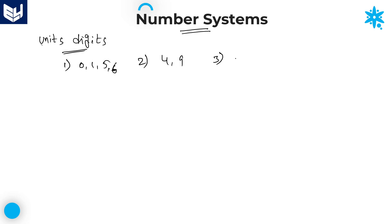Now in this session I will explain the concept of third category digits, which are 2, 3, 7, and 8. Once that is done we'll go ahead with problems related to third category digits, finishing all three categories of units place digit. The concept of third category digits will be completed by this session, and in the next session we will discuss the related problems.